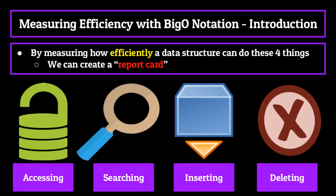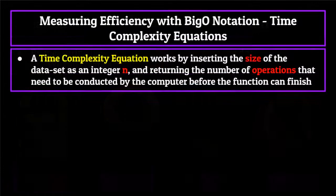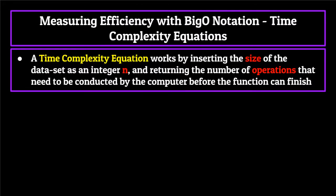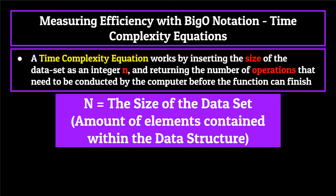If we use big O notation to create a report card, there must be some way to actually grade each of these functions. The four criteria — accessing, searching, inserting, and deleting — are all scored using big O notation time complexity equations. A big O notation time complexity equation works by inserting the size of the data set as an integer n, and returning the number of operations that need to be conducted by the computer before the function can finish. The integer n is simply the size or amount of elements contained within the data set.